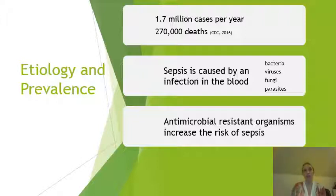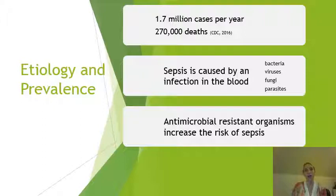Sepsis is caused by an infection in the blood. The most common cause is gram-positive bacteria, but it can be caused by other types of bacteria as well as viruses, fungi, or parasites. The presence of drug-resistant organisms also increases the risk of sepsis, and we're seeing these more and more in the hospital setting and in long-term care, so early monitoring and prevention of sepsis are very important.